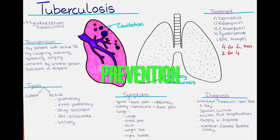How can we prevent tuberculosis? Prevention of tuberculosis includes vaccination with the Bacillus Calmette-Guérin vaccine, abbreviated as BCG, which is effective in preventing severe forms of tuberculosis, especially in children. Other preventive measures include early diagnosis and treatment of active tuberculosis cases, contact tracing, and infection control measures in healthcare settings.